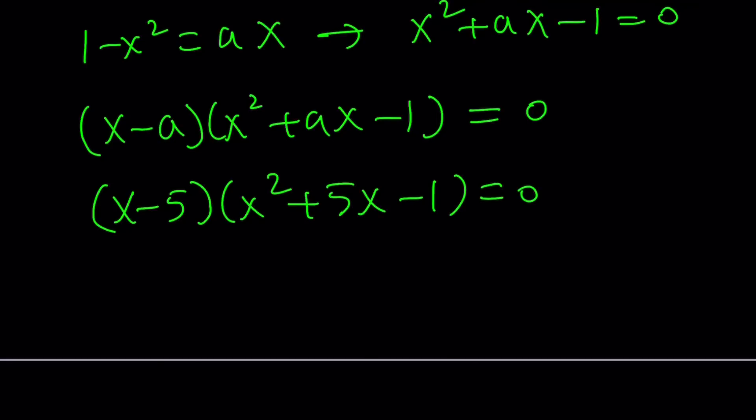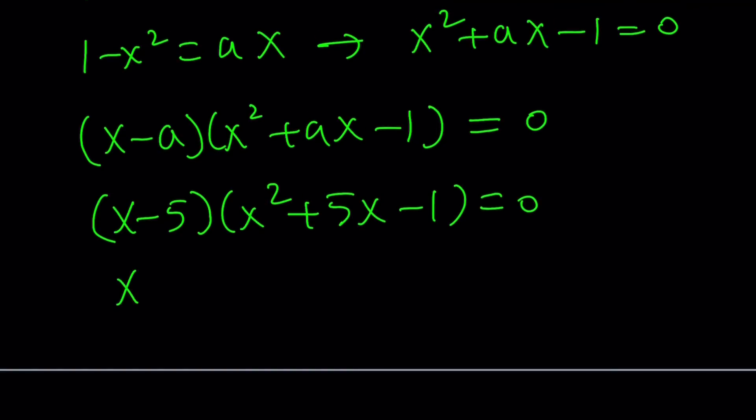As you know, this equation has three solutions. One of them is x equals 5. The other one comes from the quadratic formula. Negative b plus minus the square root of b squared minus 4ac. That's going to give you (5 plus minus square root of 29) divided by 2. And those are going to be the solutions.